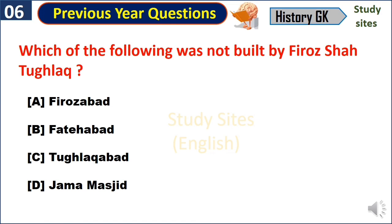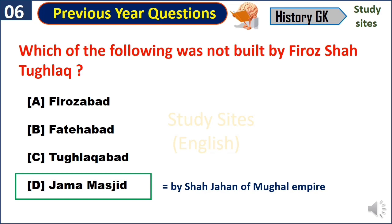Which of the following was not built by Firoz Shah Tughlaq? Jama Masjid. It was built by Shah Jahan of the Mughal Empire. Firozabad, Khwatabad, and Tughlaqabad were built by Firoz Shah Tughlaq.